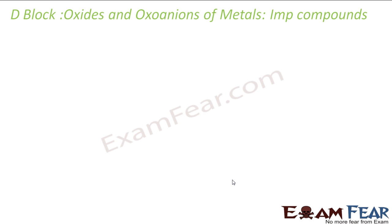The first topic is oxides and oxo-anions of metals. Oxides are formed when you react metal with oxygen at high temperature. All metals except scandium (Sc) form oxides, and all these metal oxides are typically ionic. Highest oxidation states are shown by these oxides.